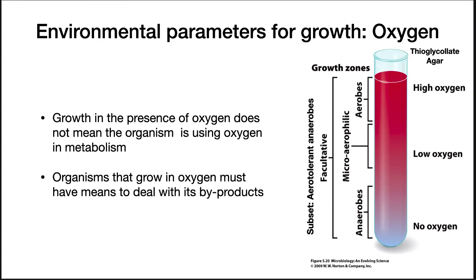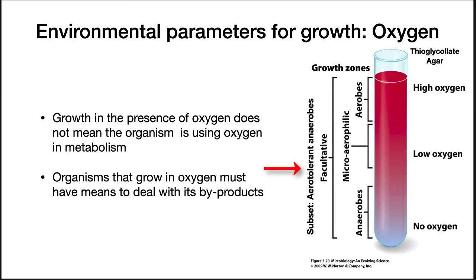A fourth environmental parameter is the presence of oxygen. Since you are dependent upon oxygen for your survival, you may not realize that it is a highly reactive gas and can be toxic to cellular metabolism. Some microorganisms cannot survive in the presence of oxygen, and we call them anaerobes. Others are dependent upon oxygen for their survival — these are aerobes. Facultative anaerobes can survive in the presence or absence of oxygen. It is possible to distinguish a subset of facultative anaerobes that don't use oxygen in their metabolism — they are aerotolerant anaerobes. Finally, some microorganisms require a concentration of oxygen that is below atmospheric levels; these are microaerophiles.